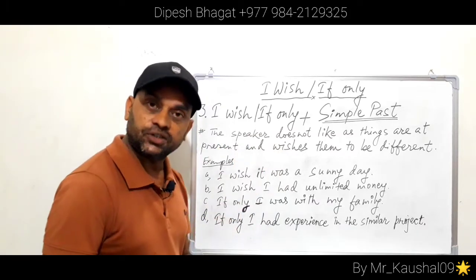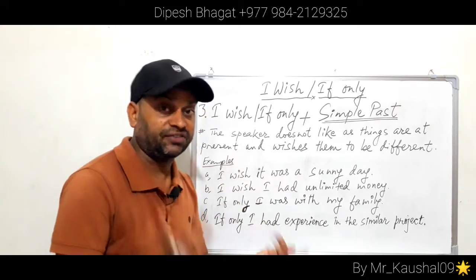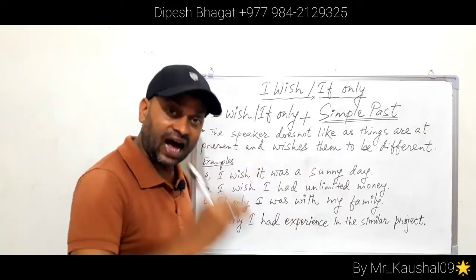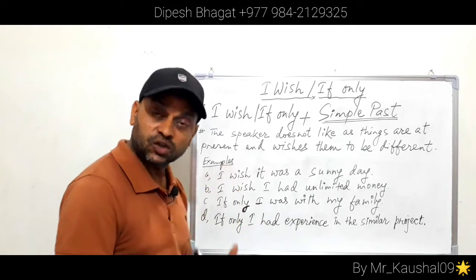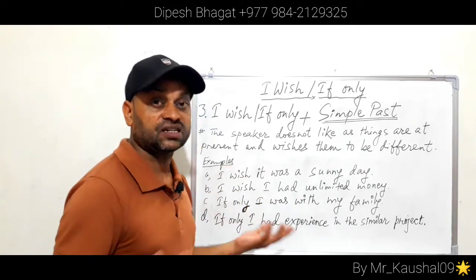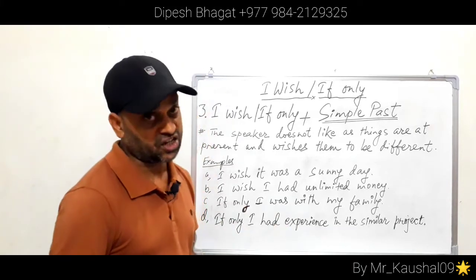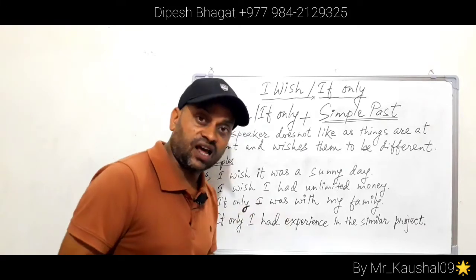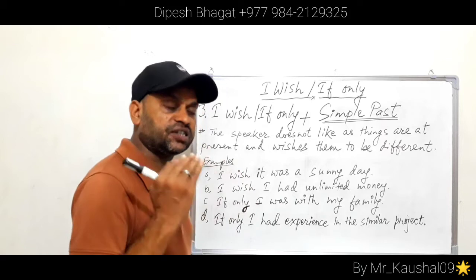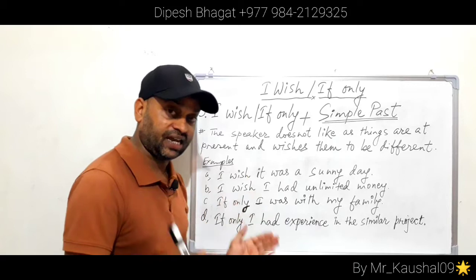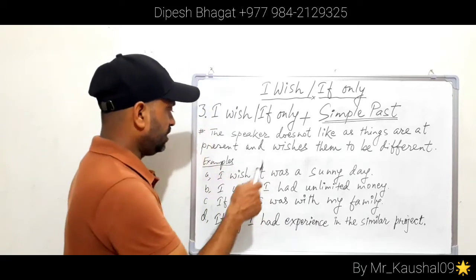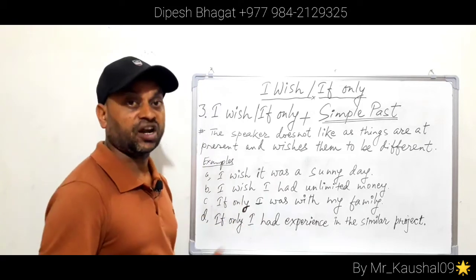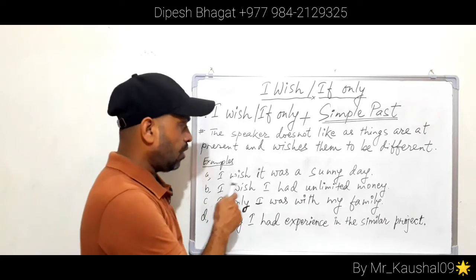The third structure is 'I wish / if only + simple past'. This structure is used when the speaker wishes something to be different, or doesn't like the present situation. For example: if it is raining the speaker doesn't like it; if it is sunny the speaker doesn't like it; if something is nearby the speaker doesn't like it. The speaker simply wishes the present situation to be different. Example: 'I wish it was a sunny day.'